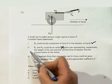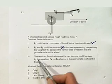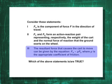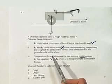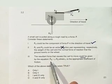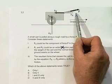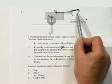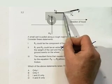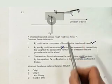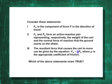The resultant force that causes the cart to move could be given by the equation—and we say could be because we don't know if this is all the forces. But for the forces that we're given, if these are all the forces, then Fa, that component that could be the component of the force F in the direction of travel, minus μ, which is going to be the coefficient of friction depending on the kind of surfaces over here, and Fd...